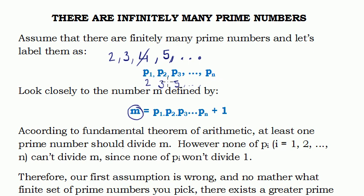However, when we investigate deeply, we see that although one of the PIs will divide this multiplication of the primes, it won't go into 1, so it won't go into M. Therefore, there should exist a greater prime number other than the elements of the set P1 up to Pn.